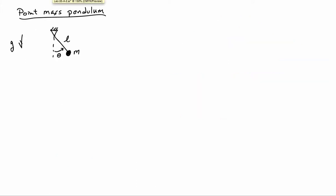To go a little further, let's consider a particular system: a point-mass pendulum. We have a rigid rod of length l attached to a frictionless pivot on one end, with a mass m on the other end, in a gravitational field g pointing downward. The pendulum can be at any angle theta — swinging in the dynamic case — but in equilibrium, theta will be some fixed value. Let's figure out what that is.